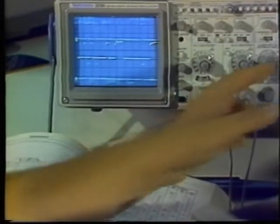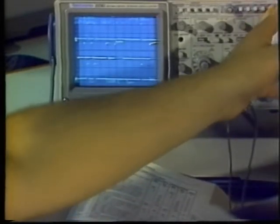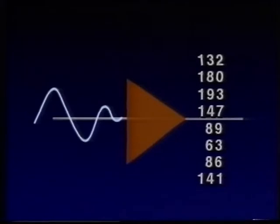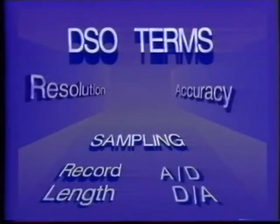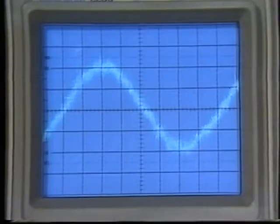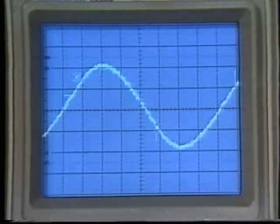Digital storage oscilloscopes represent electrical signals with numbers, which lets users capture and store an electrical event, then manipulate it to obtain better information. The methods for digitizing signal information, the terminology, and the typical features of digital storage oscilloscopes are the subjects of this program.